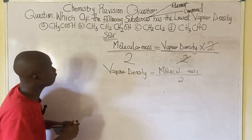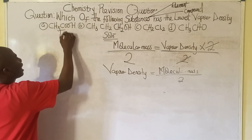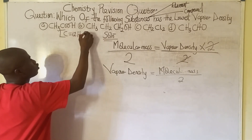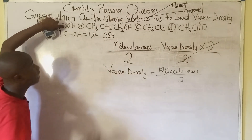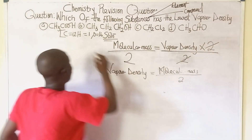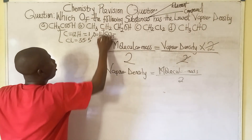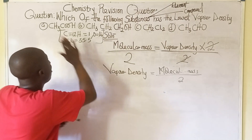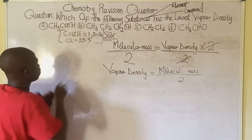Let's work through option A first. The atomic masses of the elements involved are: carbon = 12, hydrogen = 1, oxygen = 16, and chlorine = 35.5. With all this information, let's solve the molecular masses of all the compounds so we can get the vapor density.